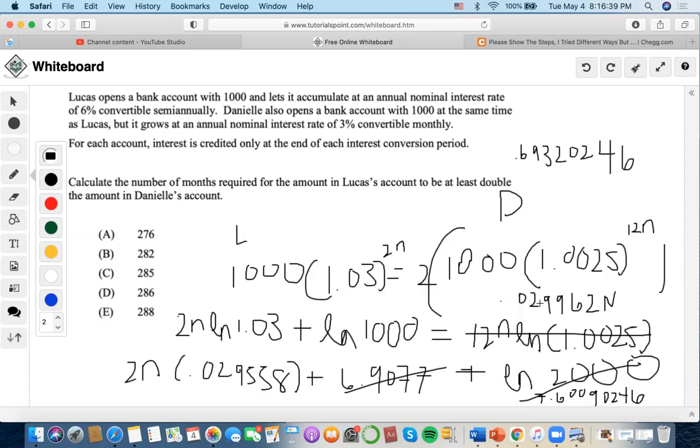Now we have 0.029962n. Let's combine two times this one, so 0.029962 times 2 is 0.059116n. So let's bring this one to the other side, subtract it from 0.029962. We're going to get 0.029154n.